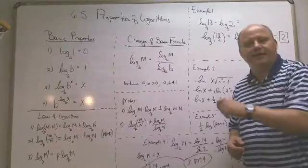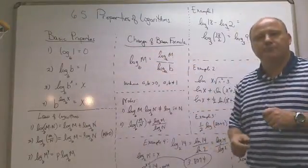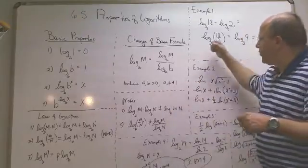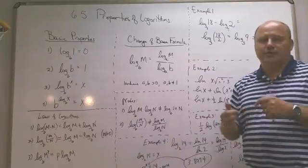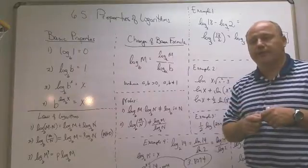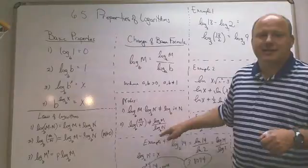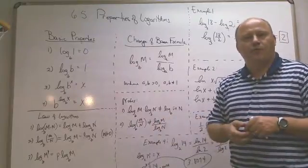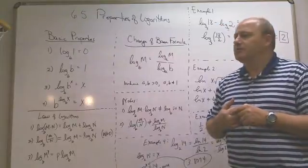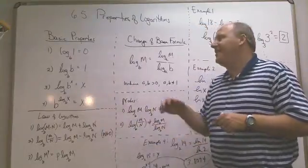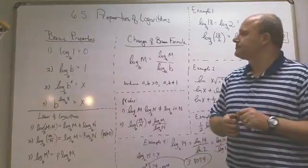This is section 6.5 — a simple section if you follow the properties correctly. The biggest problem students have is misusing the properties and laws when expanding or simplifying. If you use a property incorrectly from the start, everything that follows will be wrong — just like misusing the quadratic formula. Know the properties, know the laws, and the change of base formula is a nice optional tool.